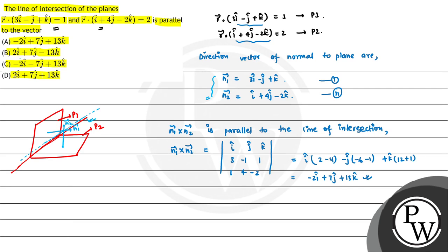which is our required vector. If we match our answer with our options, option A matches. So the final answer is option A: -2i + 7j + 13k. Hope you understood it well, best of luck.